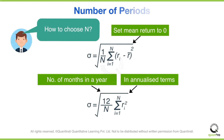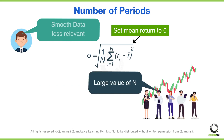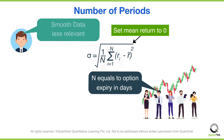We can see from the equation that we still need to choose n, the number of periods we average over. There is no right answer. Smaller values of n only use recent data but are noisy, while large values of n are smoother but use data that is less relevant. Often people choose n to be roughly equal to the expiration of the options they are interested in, but there is no reason why this is optimal.